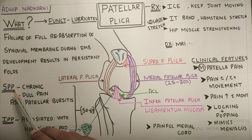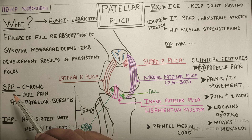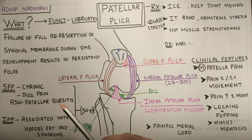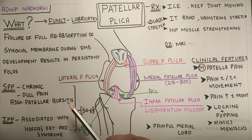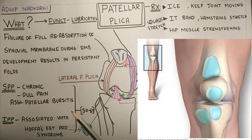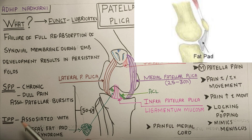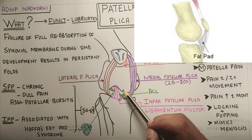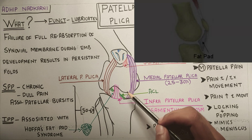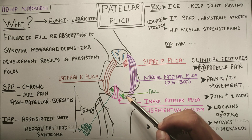Moving on to suprapatellar plica syndrome and infrapatellar plica syndrome. Suprapatellar plica syndrome is mostly chronic and has dull aching pain. It is mostly associated with patellar bursitis — bursa are fat-filled pouches in the knee joint. Infrapatellar plica is associated with HOFAS fat pad syndrome. The HOFAS fat pad is a tissue of fat present below the patella — that is, infrapatellar — and between the tibia and femur. It prevents friction within the knee joint and carries out smooth motion.